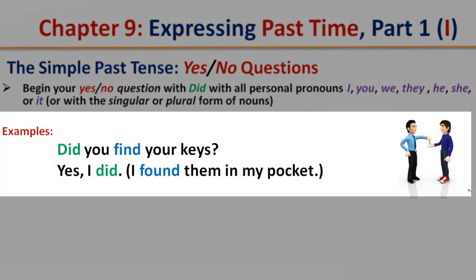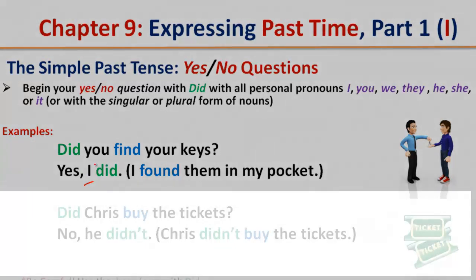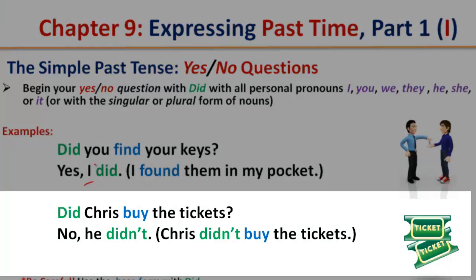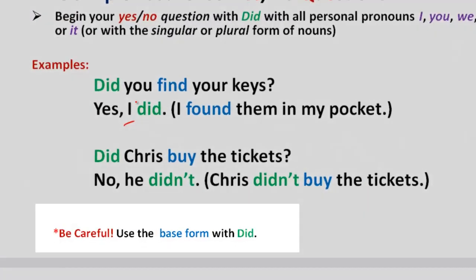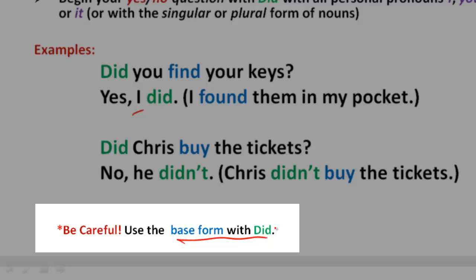Did you find your keys? Yes, I did. I found them in my pocket. I is the personal pronoun and we're using did with it. Did Chris buy the tickets? No, he didn't. Chris didn't buy the tickets. Be careful, use the base form with did.